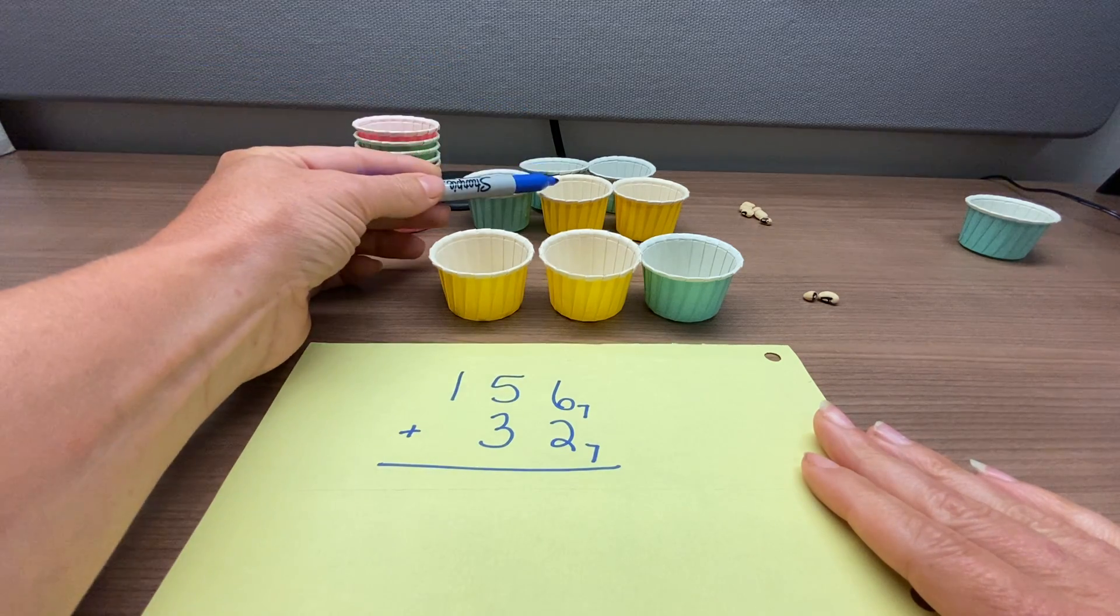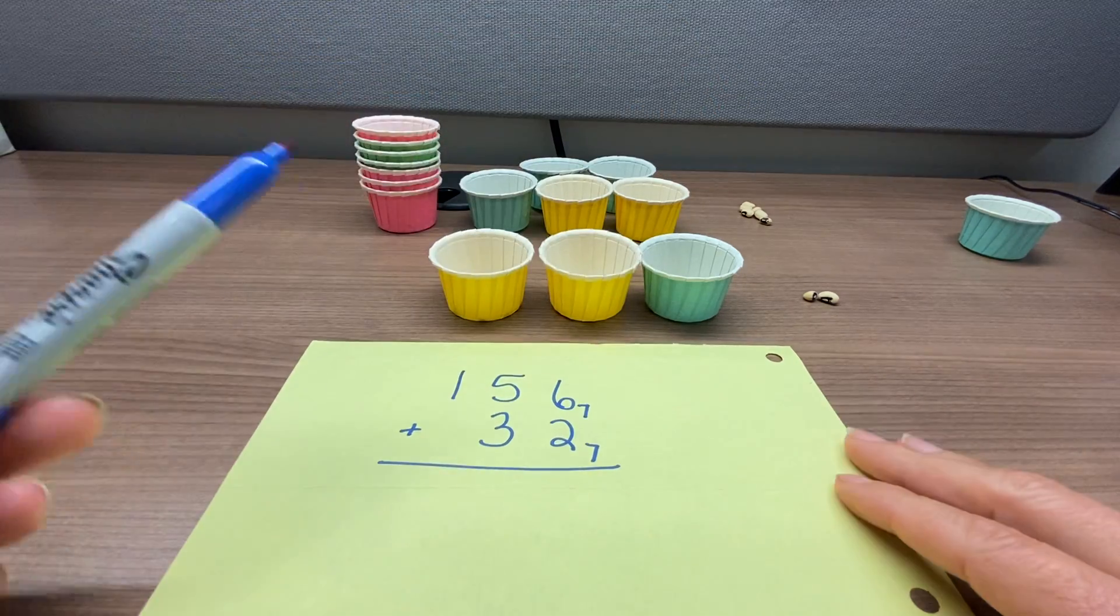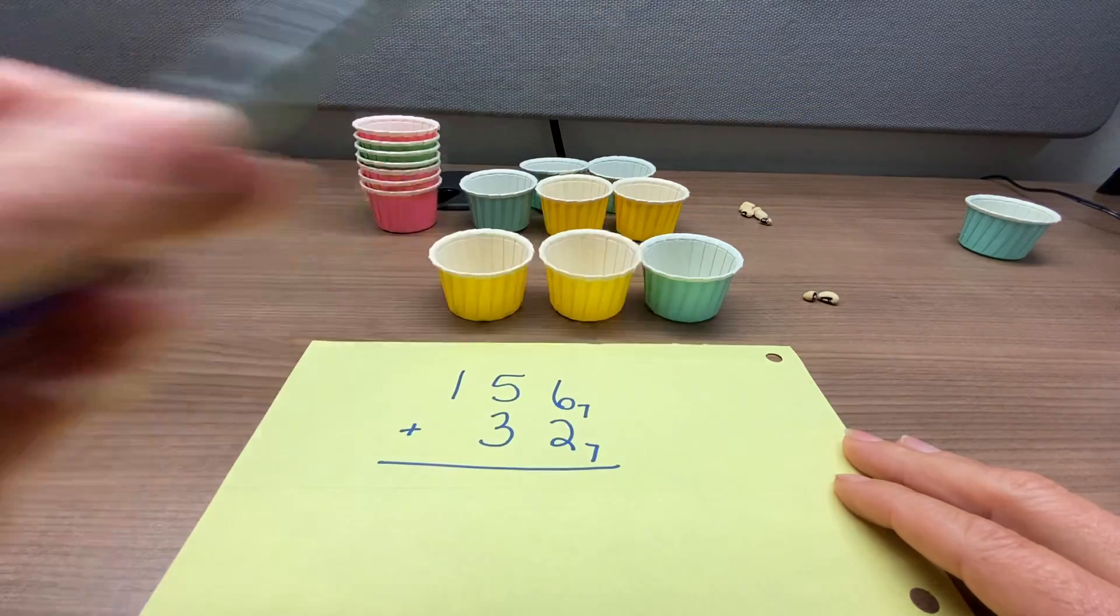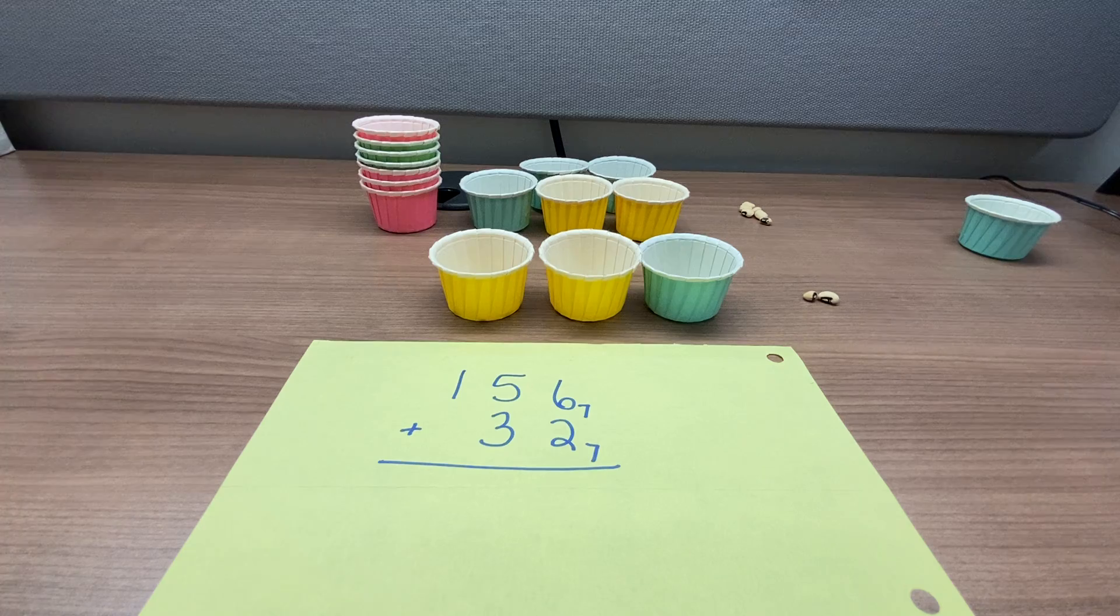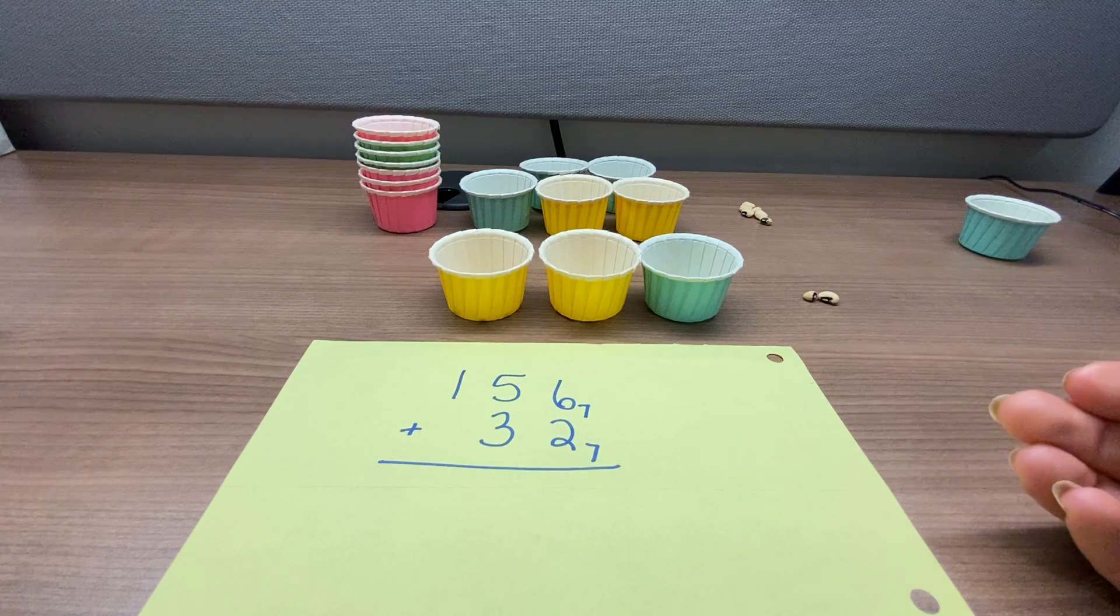So there's our 1, our 5 sevens, and our 6 ones. And then we have our 3 sevens and our 2 ones for the second number. And again, putting this all together, that's what addition is, and seeing what we get in the end.